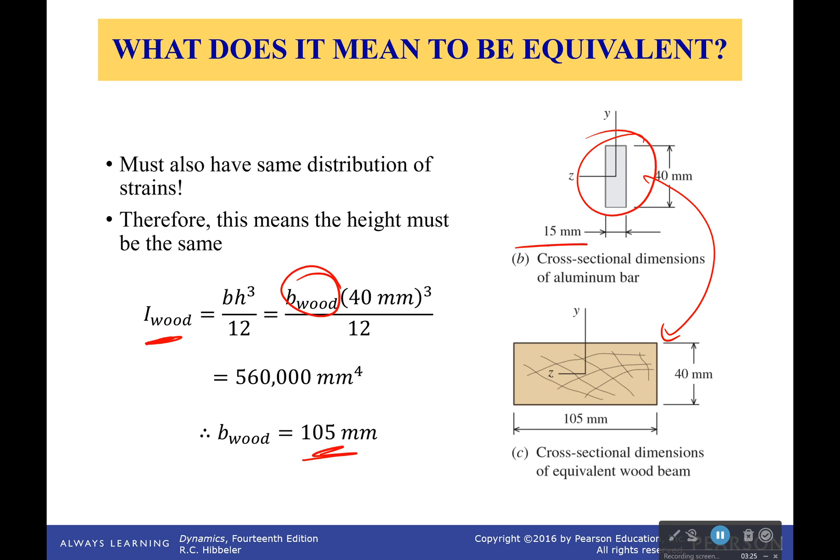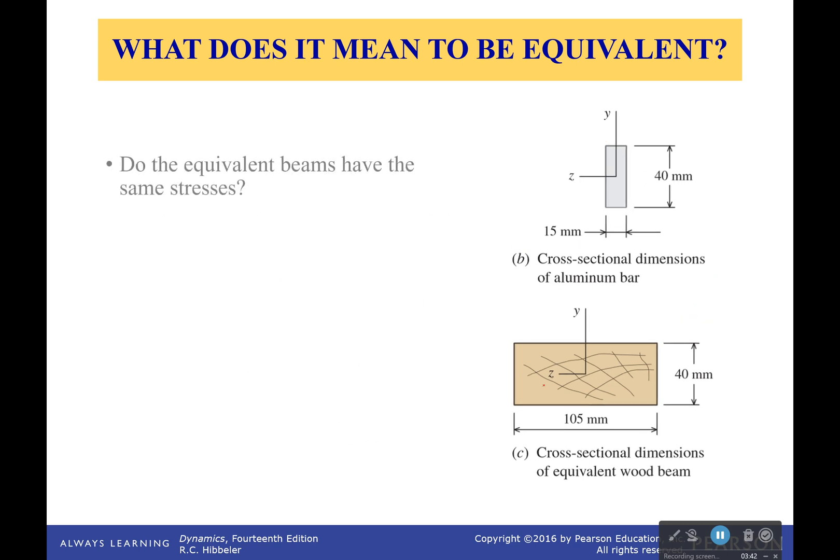Okay, so we've gotten a little bit of an idea of what it means to be equivalent. Same radius of curvature, which means that it's going to have the same distribution of strains. And we get that by making it either thinner or fatter. We don't change the height. Now, another thing we might be wondering is do those equivalent beams have the same stresses? They have the same strains. Why not the same stresses? Well, what do you think?